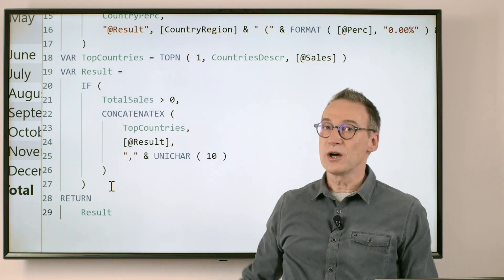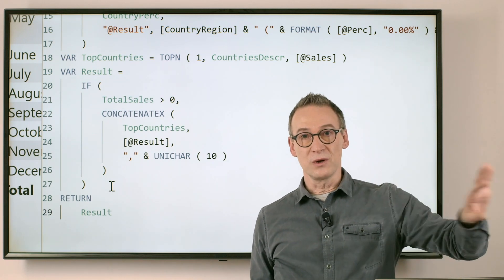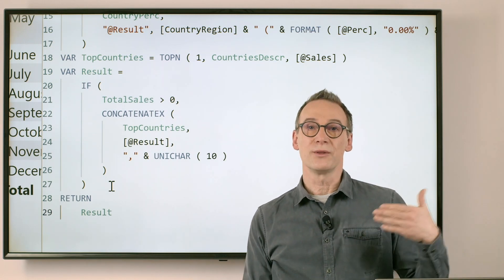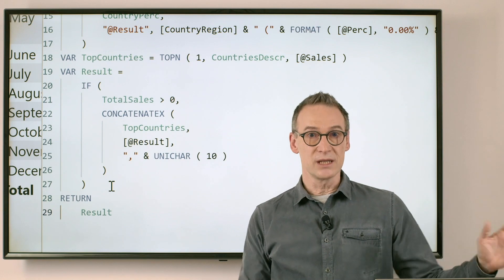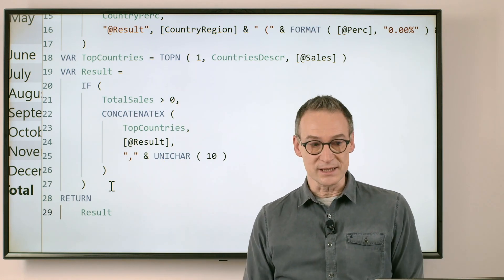We do all this only if there are sales, in order to avoid showing any row where there are no sales, because with no sales, all the countries will be in the top 10 with zero sales.